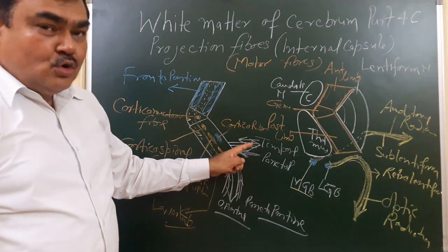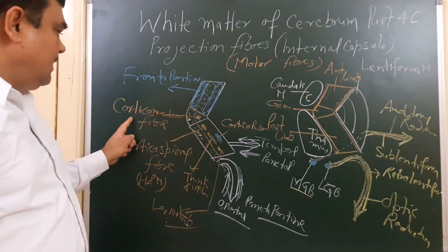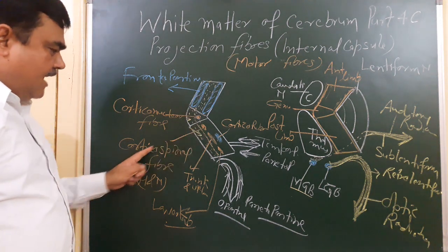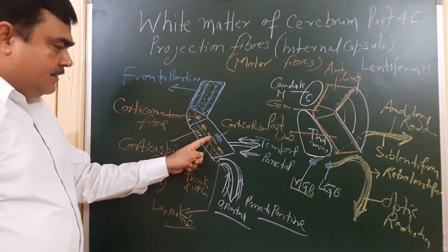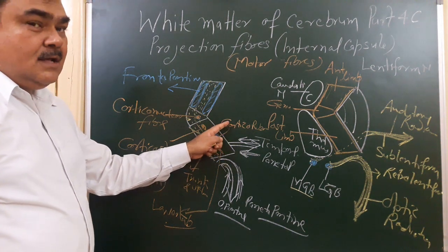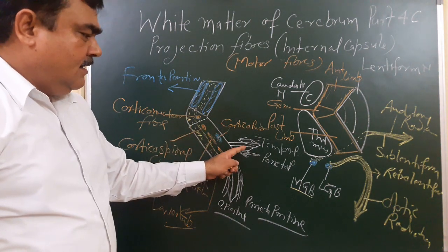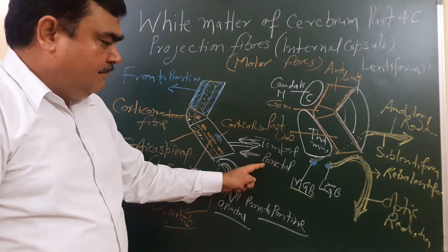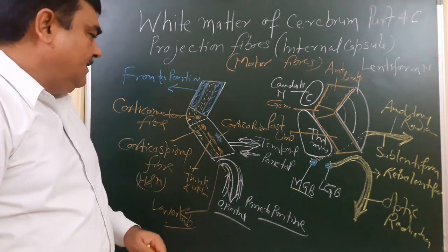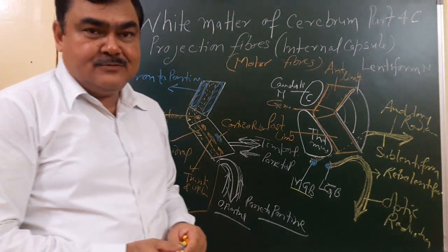In summary, the motor fibers passing through the internal capsule are: in the anterior limb — frontopontine fibers; in the genu — corticonuclear fibers; in the posterior limb — corticospinal fibers for the head and neck, trunk and upper limb, and lower limb, along with corticorubral, corticoreticular, and corticonuclear fibers. In the retrolentiform part: temporopontine, parietopontine, and occipitopontine fibers. Thank you.